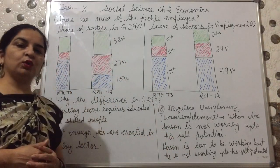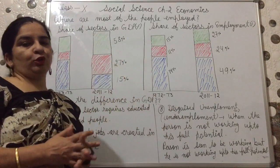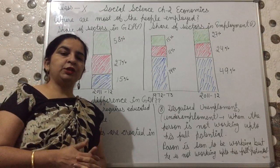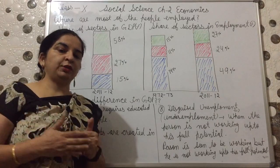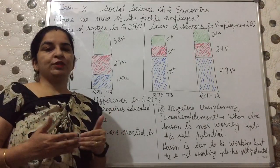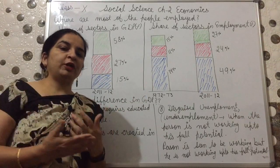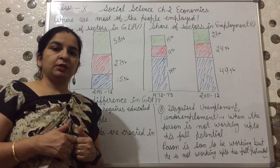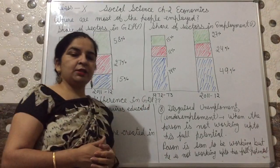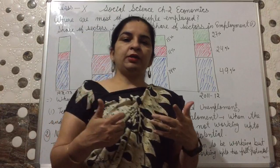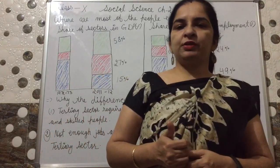So in this topic, what we learned is that there is a difference between share in GDP and share in employment. In GDP, the more contribution comes from the tertiary sector. But in employment, more jobs are provided by the primary sector. We also learned the reasons for this difference. In the next lecture, we will discuss how we can create more employment in the primary sector.